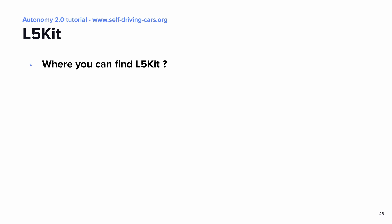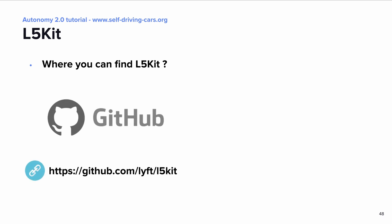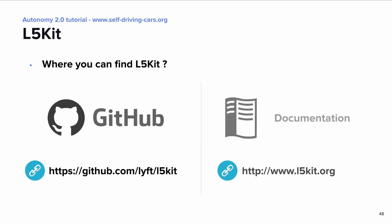Where can you find L5Kit? L5Kit is hosted on GitHub, so you can just go to github.com/lyft/L5Kit and you will find the open source code for our project together with tutorials and the Jupyter notebooks that will be shown during the course of this tutorial. You can also find comprehensive documentation at the website l5kit.org.